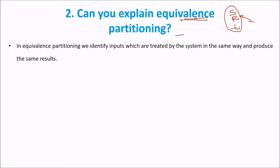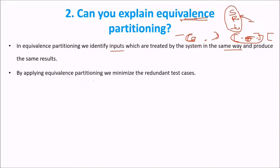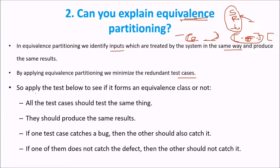In equivalence partitioning, we identify inputs which are treated by the system in the same way and produce the same result. If we make three classes, taking any input within the same class will produce the same result. You can check any value within a class because all inputs in an equivalence class produce the same results. By applying equivalence partitioning, we minimize redundant test cases.